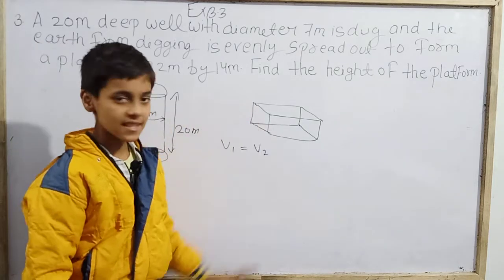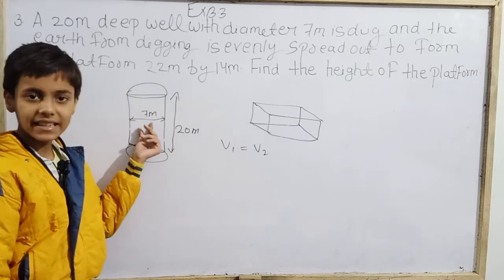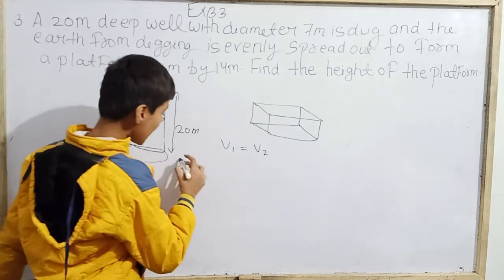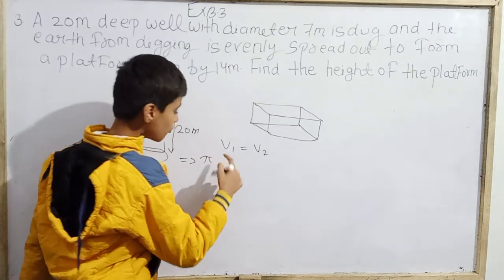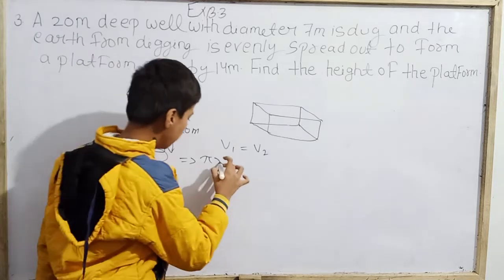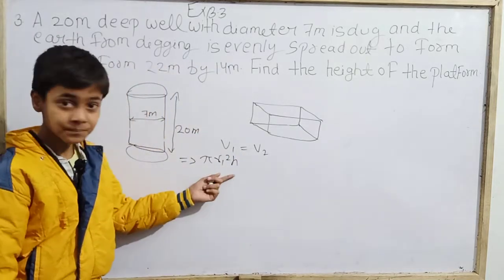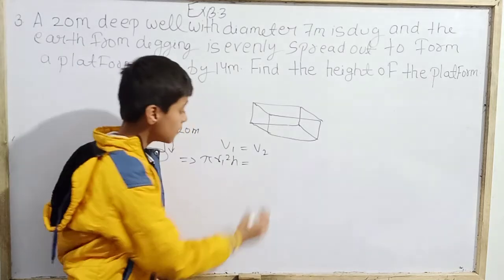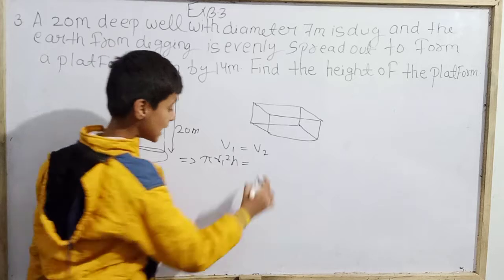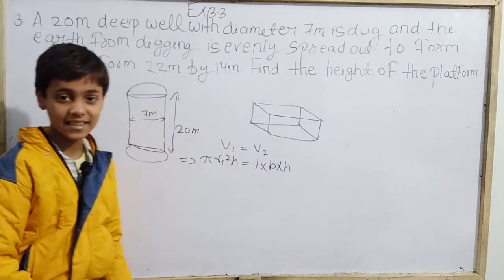The well is cylindrical in shape and the platform is in the form of a cuboid. The volume of a cylinder is pi r squared h, so V1 equals pi r squared h. The volume of a cuboid is length into breadth into height, so V2 equals length into breadth into height. Notice there are two different heights here, so let's call them h1 for the well and h2 for the platform.